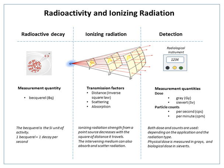The Becquerel succeeded the Curie, an older, non-SI unit of radioactivity based on the activity of 1 gram of radium-226. The Curie is defined as 3.7 × 10¹⁰ s⁻¹, or 37 GBq.